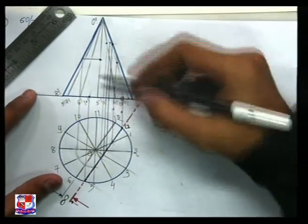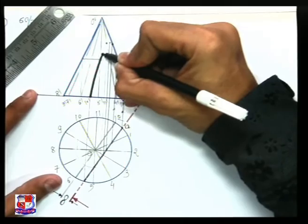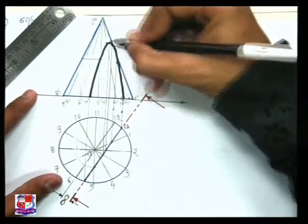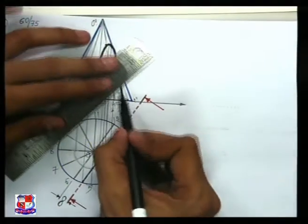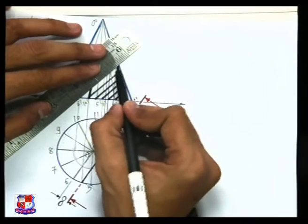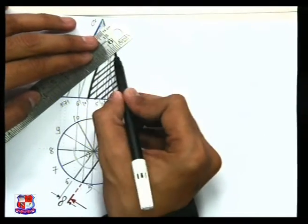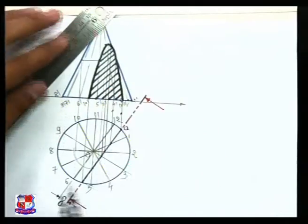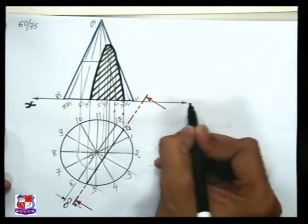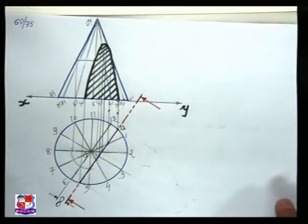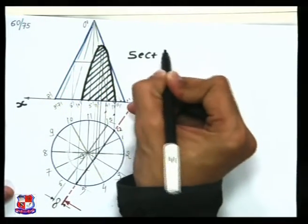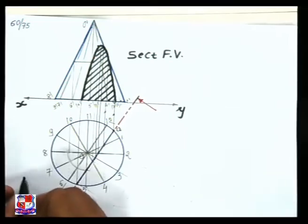Now join all these points with a smooth curve — it would appear like this. As it is a cone there will be no straight line, so a smooth curve forms the true shape. This is the sectional front view. Draw section lines within this section — all lines should be equidistant and should make an angle of 45 degrees with the reference line XY, which also represents the intersection of HP and VP. Write: it is a sectional front view.